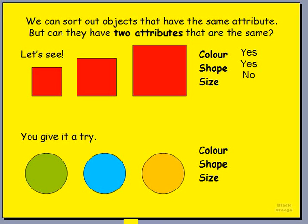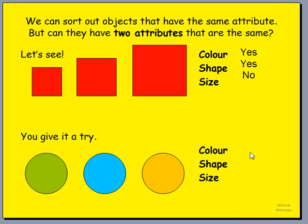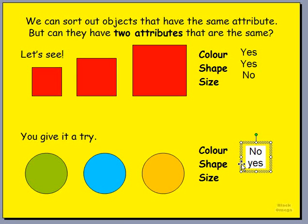What shapes do you see here? That's right, they are circles. So let's see if anything else is the same. How about the color? Is the color the same in this example? The color is not the same. And the shape? The shape is the same — they are all circles. And finally, the size. Are the sizes the same? You're right, they are the same.